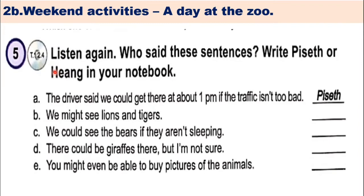Now continue. Number 5: Listen again, who said these sentences? Write the speaker's name in your notebook. A: the driver said we could get there at about 1pm if the traffic isn't too bad. B: we might see lions and tigers. C: we could see the bears if they aren't sleeping. D: there could be giraffes there but I'm not sure. E: you might even be able to buy pictures of animals.